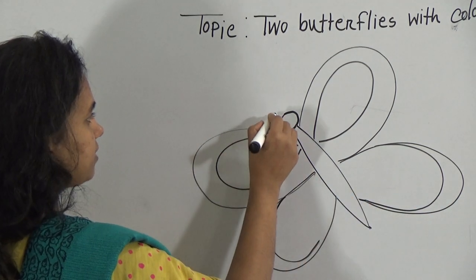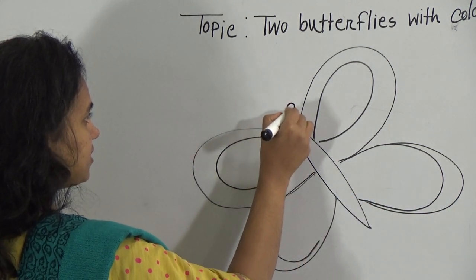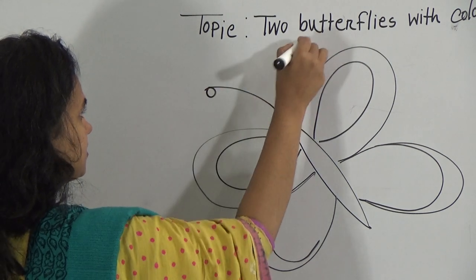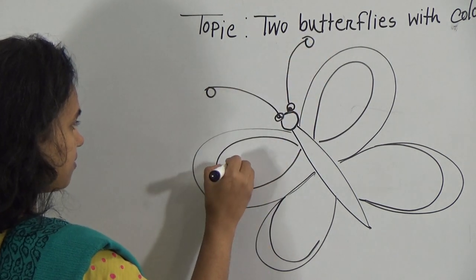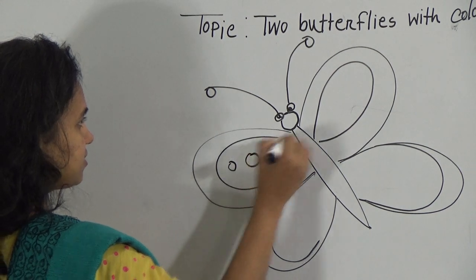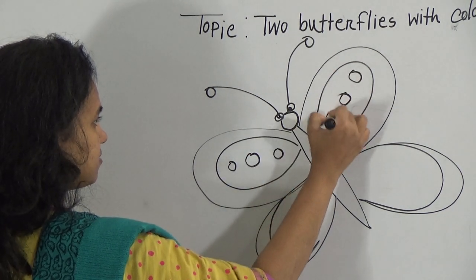All of you know that butterfly is a very colourful thing. For giving a colour variation, you can draw here some bubble also.